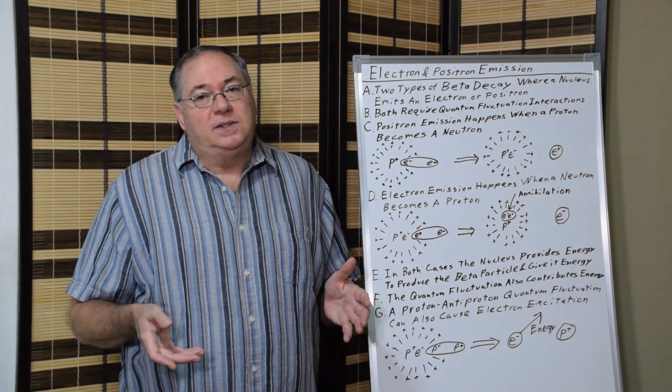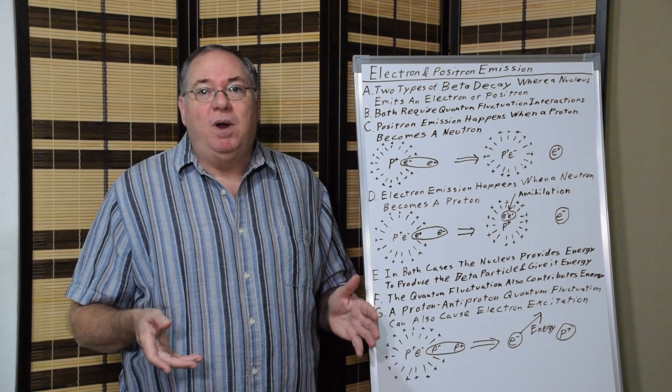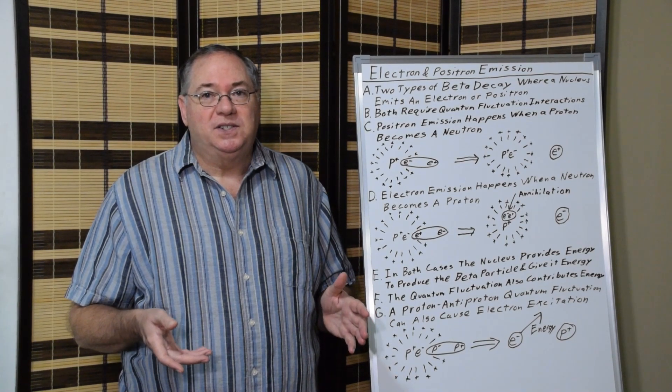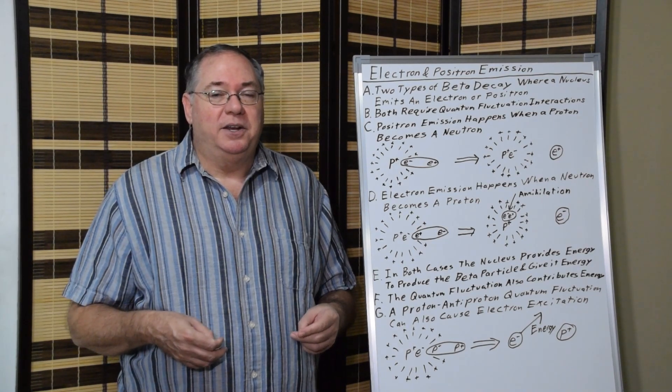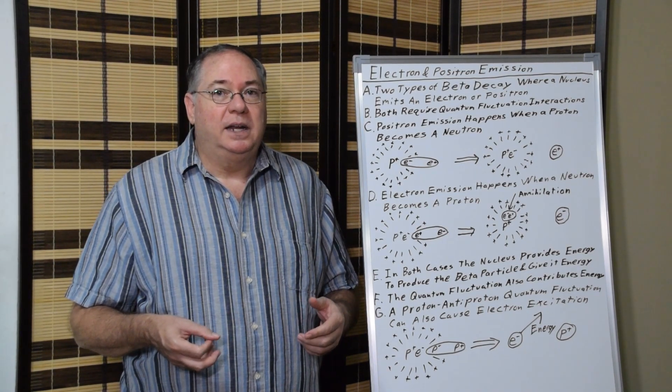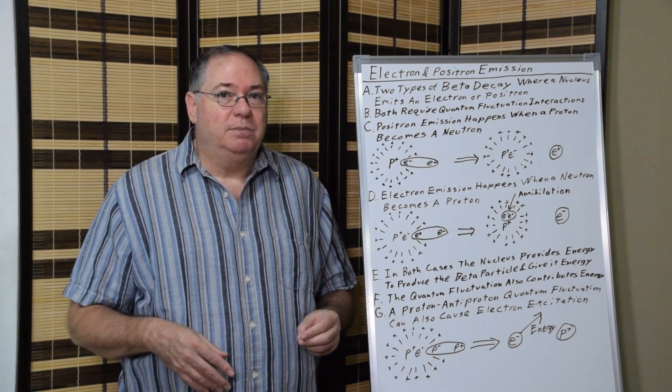What they missed is that you can explain this with quantum fluctuation interactions instead, and eliminate the W and Z bosons and eliminate neutrinos from the theory entirely, and come up with a much simpler theory.